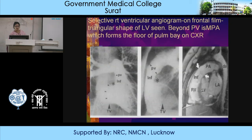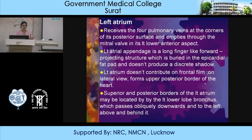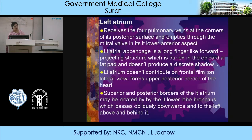The left atrium is situated most posteriorly. It receives the four pulmonary veins at the corners of its posterior surfaces and empties through the mitral valve in its lower anterior aspect. The left atrial appendage is a long finger-like forward projecting structure buried in the epicardial fat pad, so it doesn't produce a discrete shadow. The left atrium does not contribute anything on the frontal view; however, on the lateral view it forms the upper posterior border of the heart. The superior and posterior borders of the left atrium may be located by the left lower lobe bronchus, which passes obliquely downwards and to the left above and behind the left atrium.